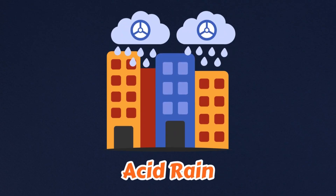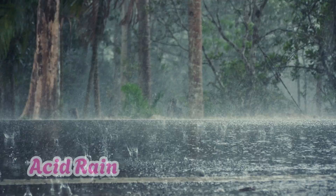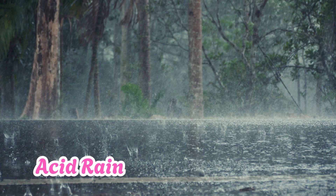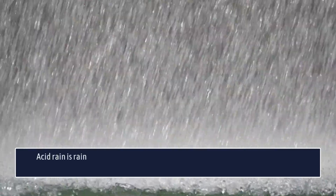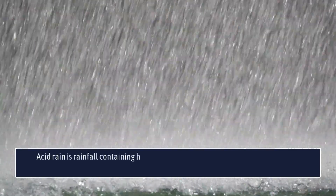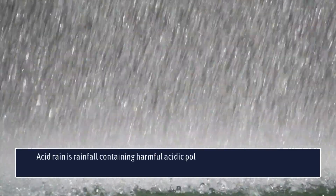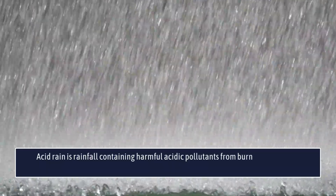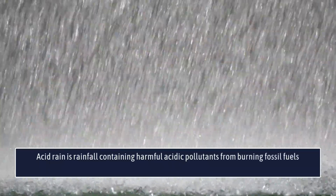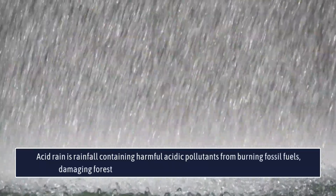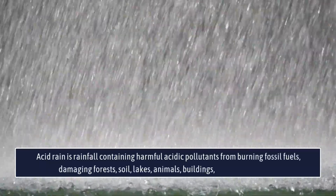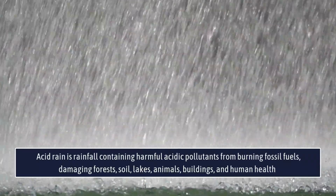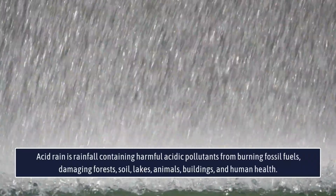Acid rain. This is acid rain. Acid rain is rainfall containing harmful acidic pollutants from burning fossil fuels, damaging forests, soil, lakes, animals, buildings, and human health.